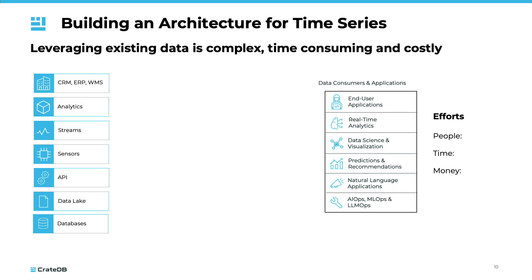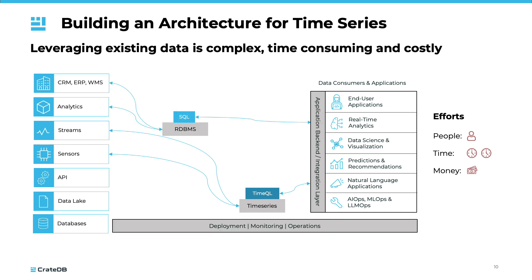Operational tasks like MLOps also come into play. A project typically starts with a time series database that imports data from sensors or streams. New applications can be built in a timely manner, often with a small team and within budget. As the application grows, you start working with contextual data imported from enterprise systems like ERP or CRM. At this point, a time series database does not fulfill the requirements, leading to the introduction of a relational database.